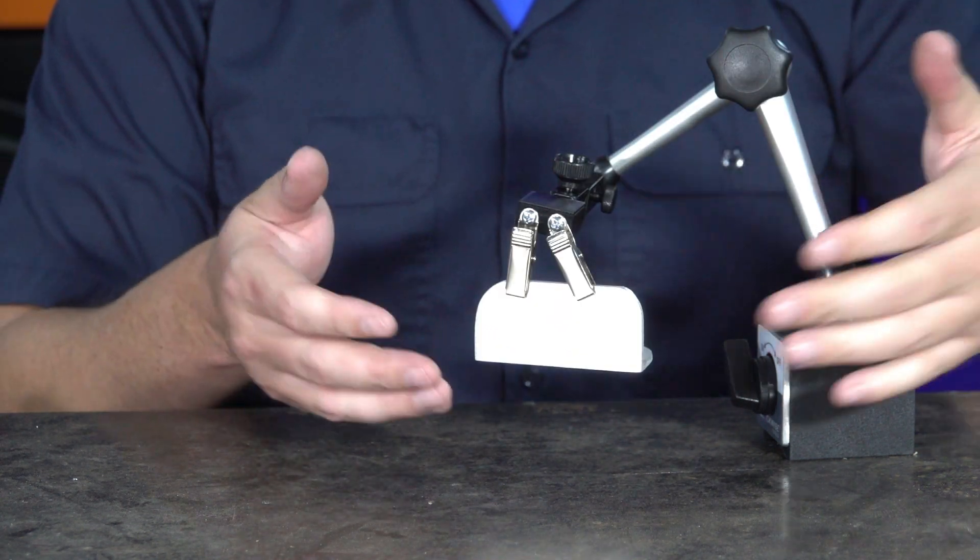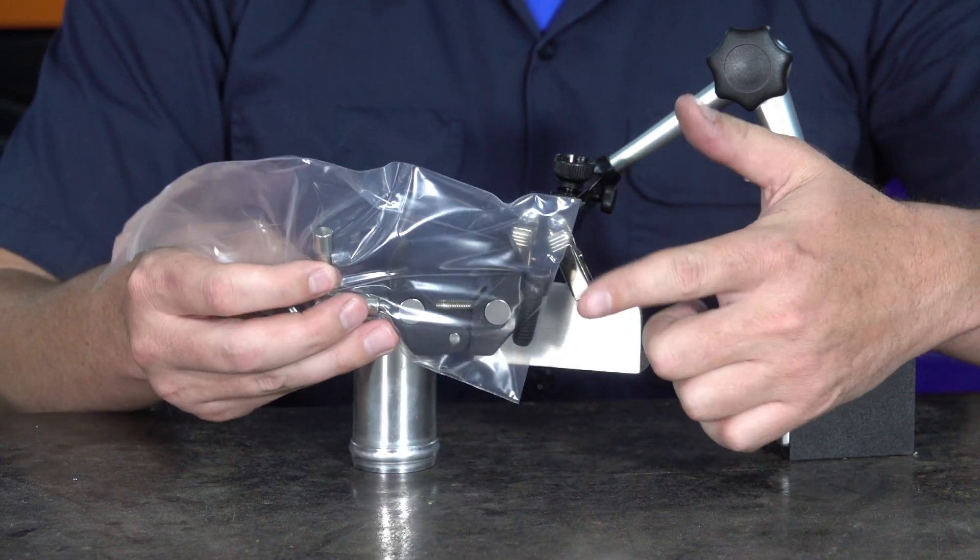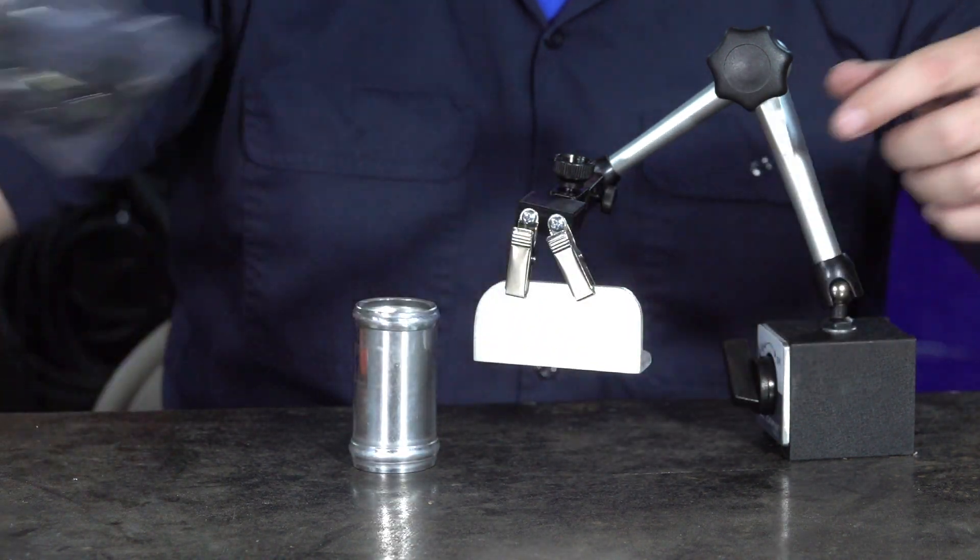Now this is really good for flat objects like this here but what if you wanted to hold on to some round tubing? Now we're going to have to put a different clamp on for that and this is sold separately.